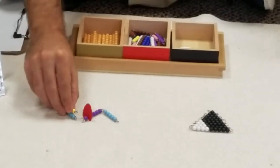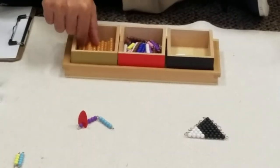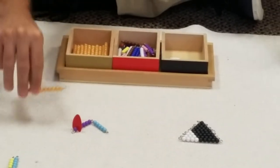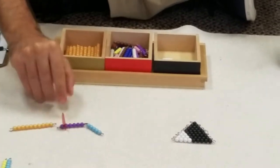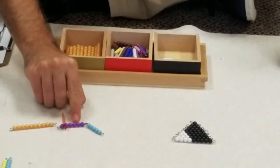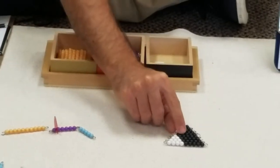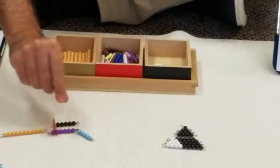We take these ones away and we're gonna change them for a 10. Now we have left on this side 1, 2, 3, 4, 5. So we get our 5 from the pyramid and we change it.